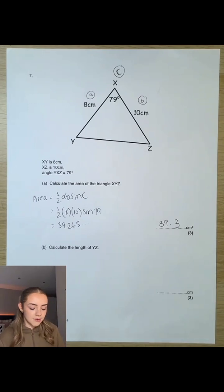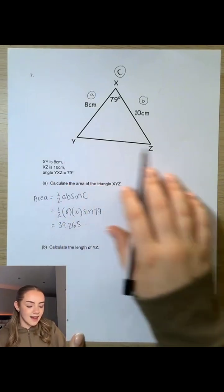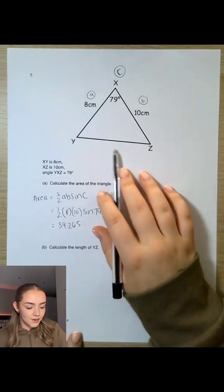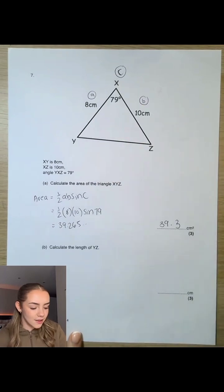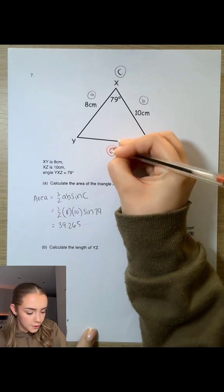Now for part b, we want to calculate the length of YZ. So YZ is this side here. I'm going to use x, but this is angle x. So let's just call this, we'll label it as a, and it fits into our equation here. So we've got a, that's a bit of a rubbish a. Here we go.